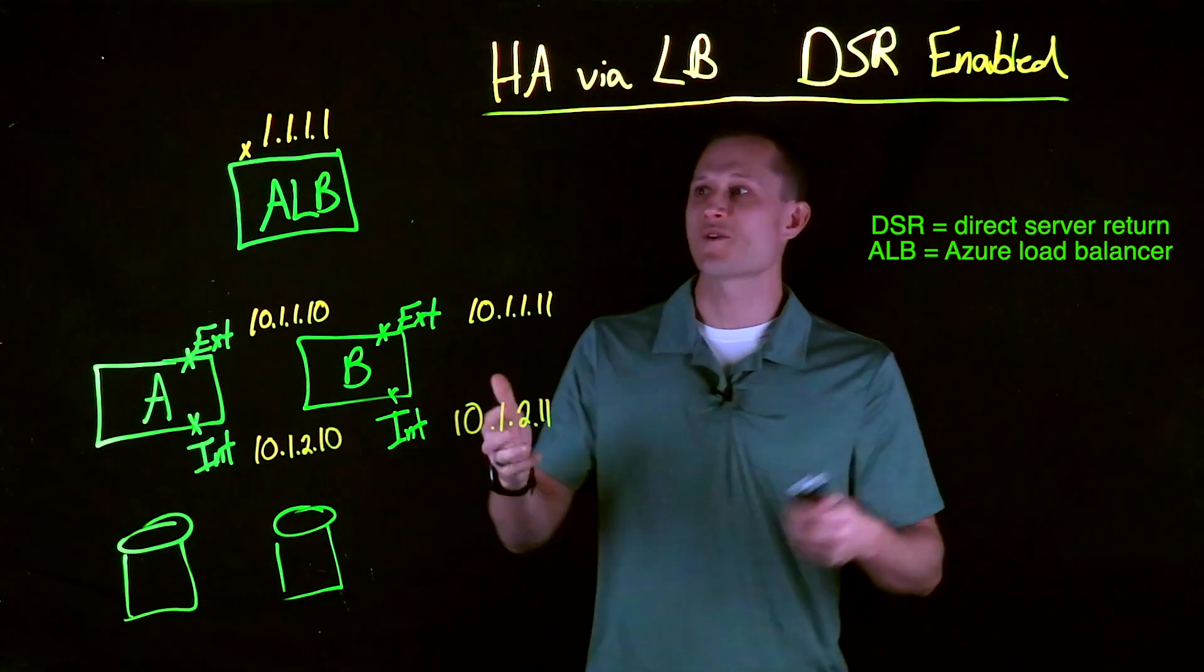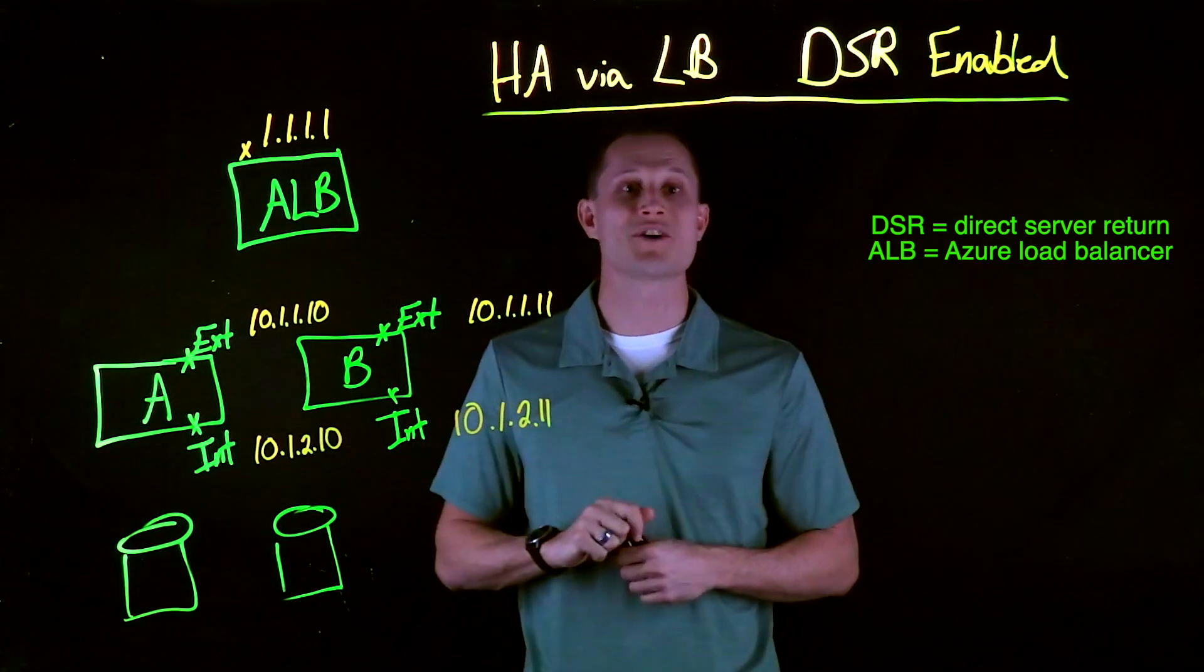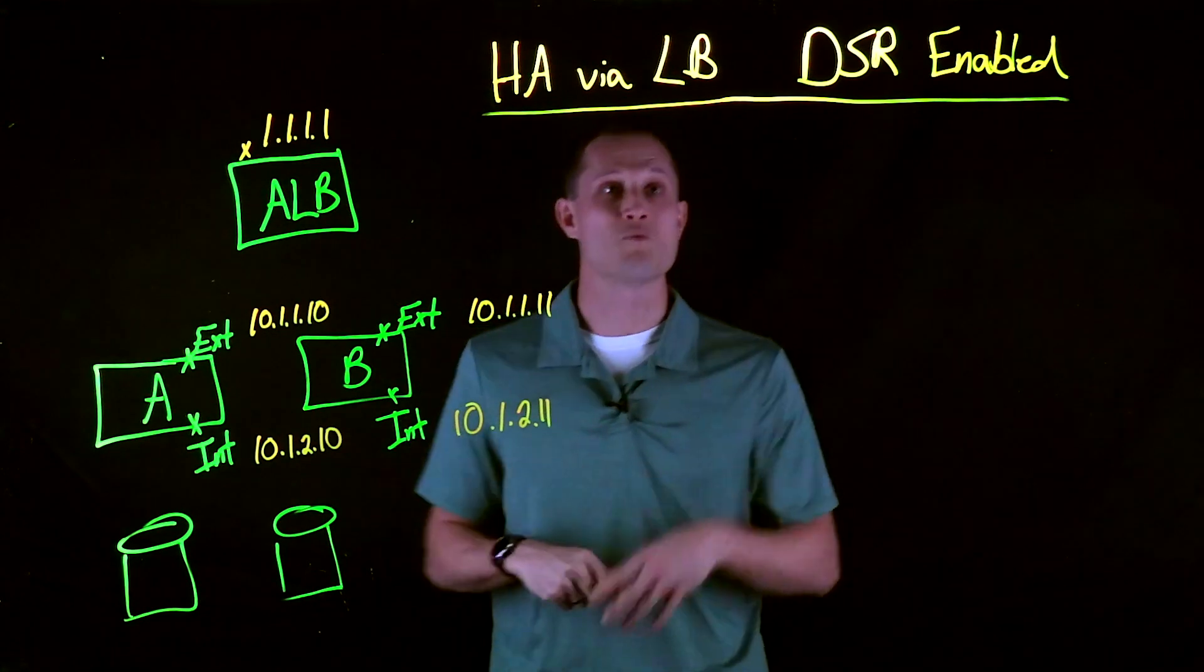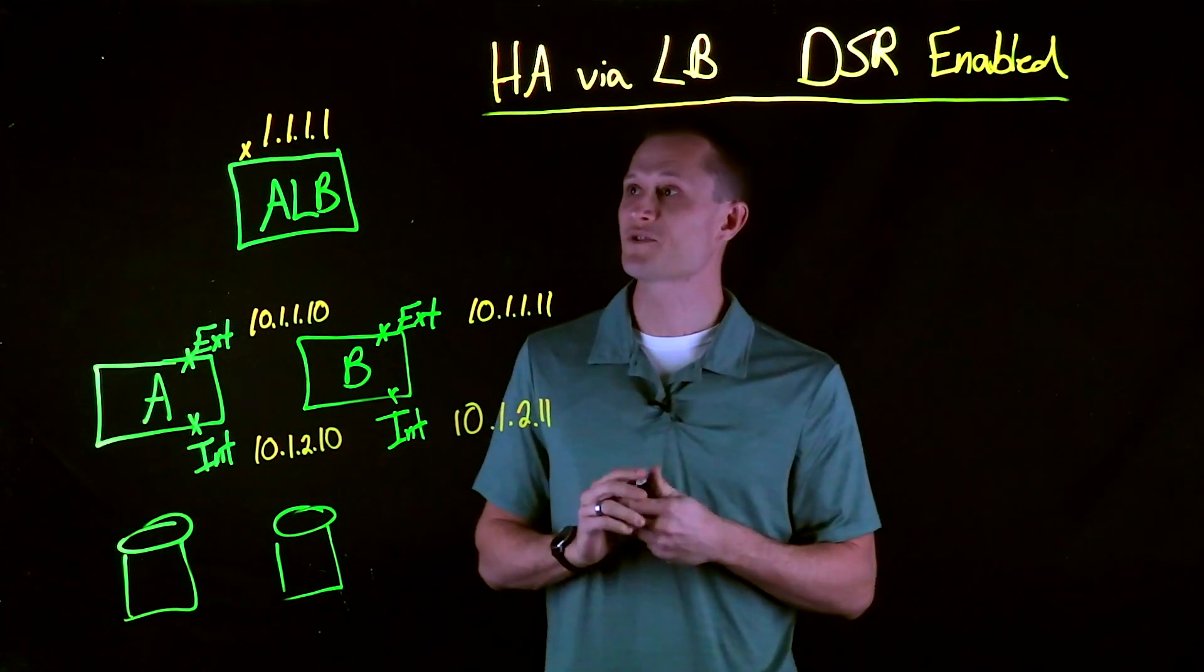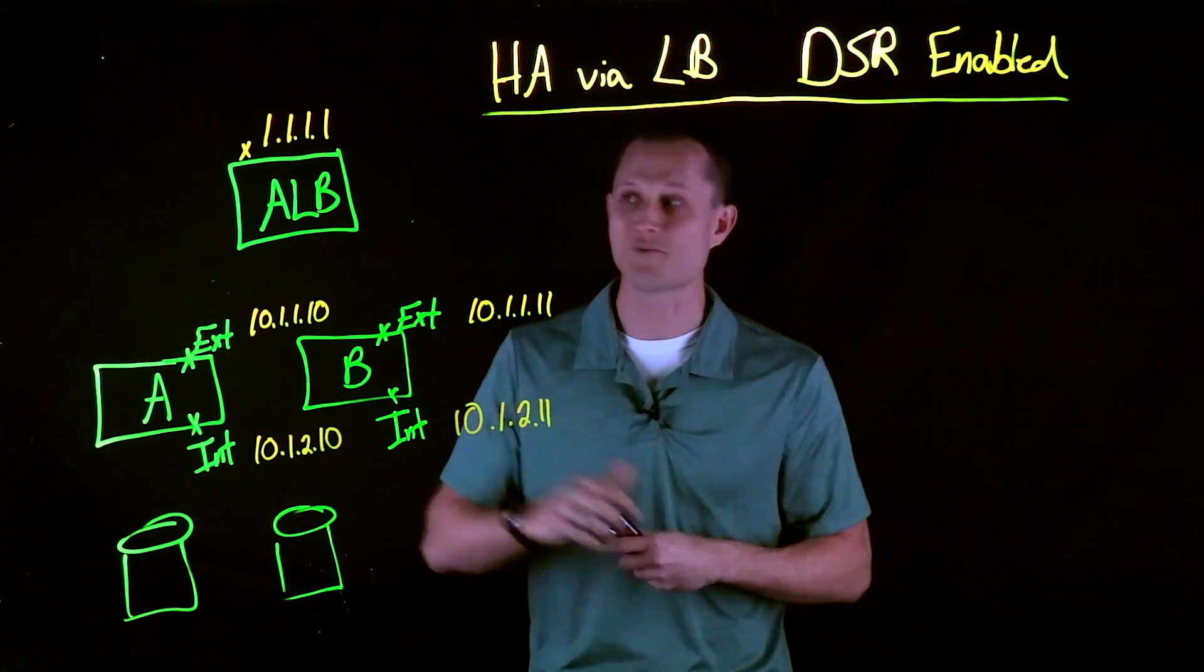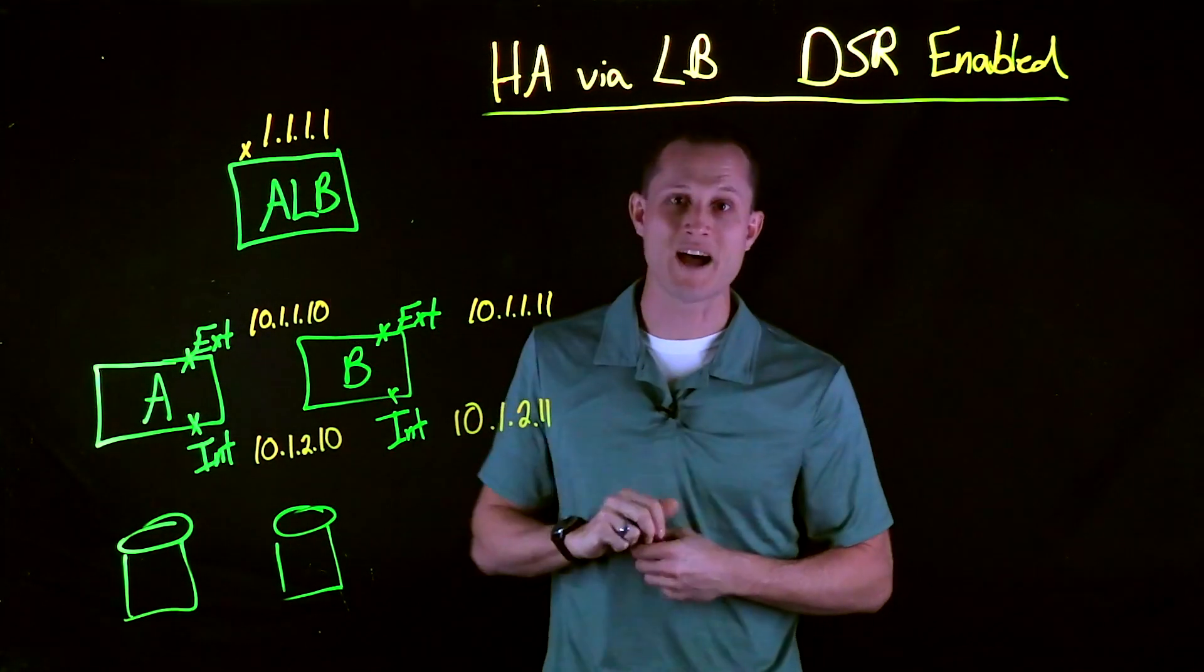One of the requirements, of course, is that the ALB has DSR enabled. By default, it is disabled, but when it is enabled, what are the benefits of this? This reduces configuration complexity within the ALB, as well as the F5 side.